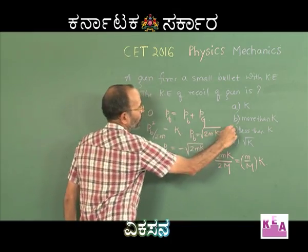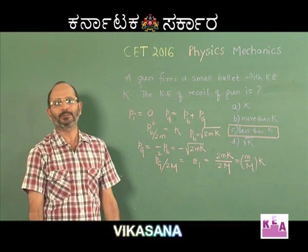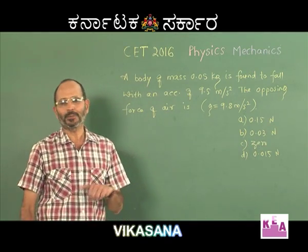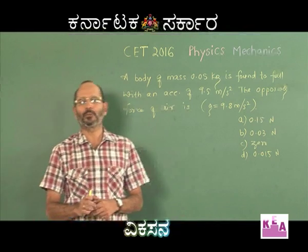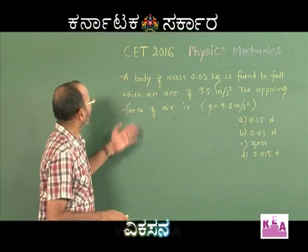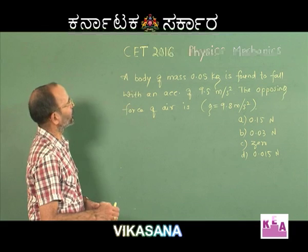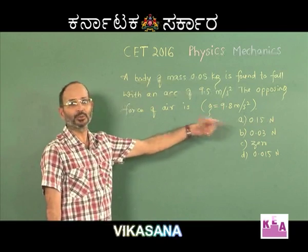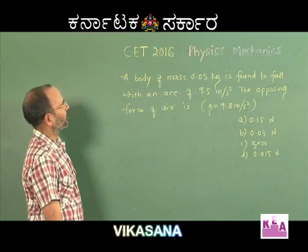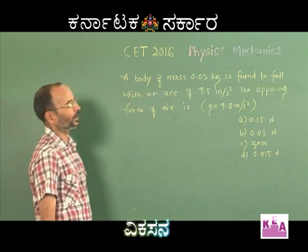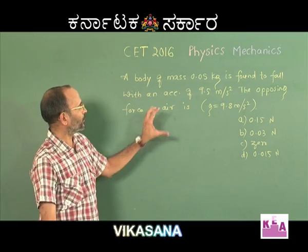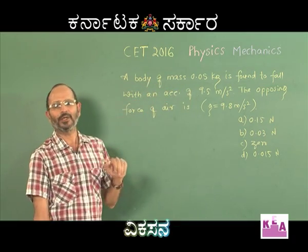So the correct answer is C. Here is one more question based on the importance of free body diagrams. A body of mass 0.05 kg is found to fall with an acceleration of 9.5 m/s² — not 9.8 m/s² as expected. The opposing force of the air is to be found. We draw a free body diagram of the falling mass and apply F = ma.